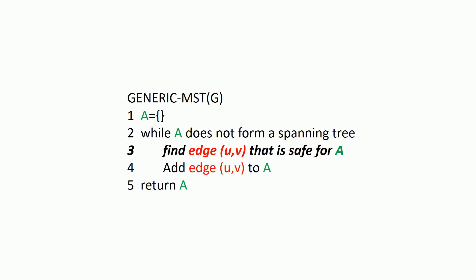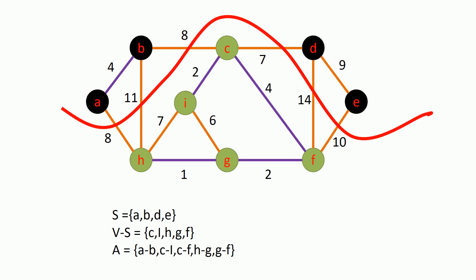The question is how to find an edge that is safe for A. For that, I am going to use a specific theorem which involves the concept called cut. So first let me introduce you to the concept called cut. A cut is a hypothetical line which divides a graph into two partitions. For example, in this diagram, the red colored curve is a cut. It divides the graph into two sets called set S and set V minus S.